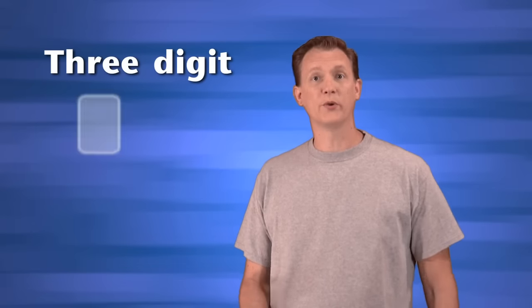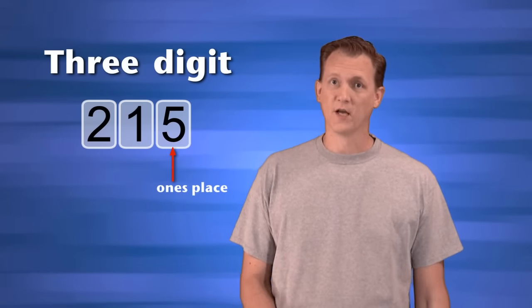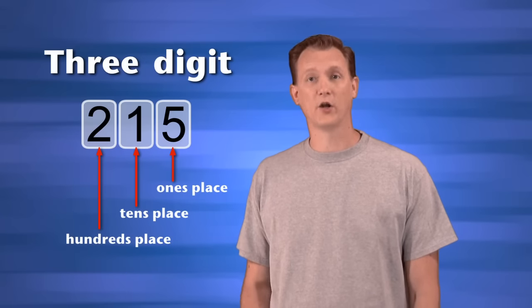Three-digit numbers use three number places. There's a 5 in the ones place, a 1 in the tens place, and a 2 in the hundreds place.